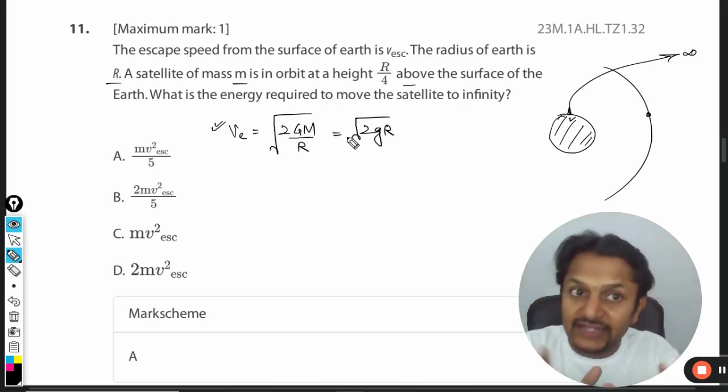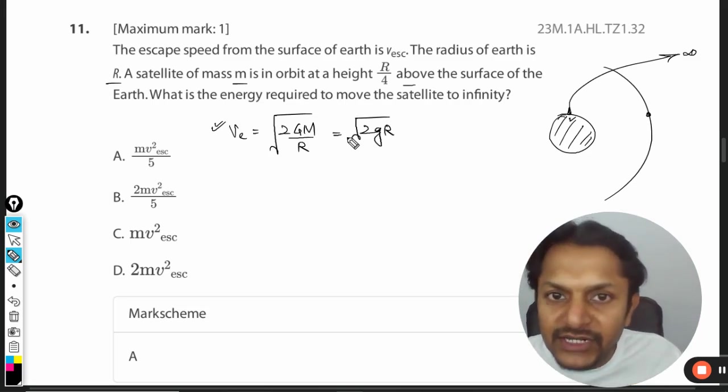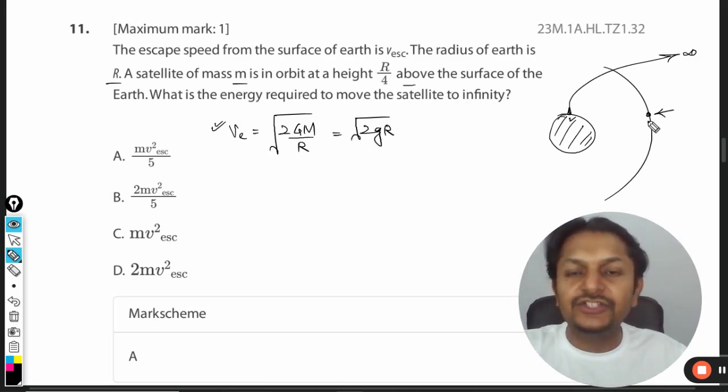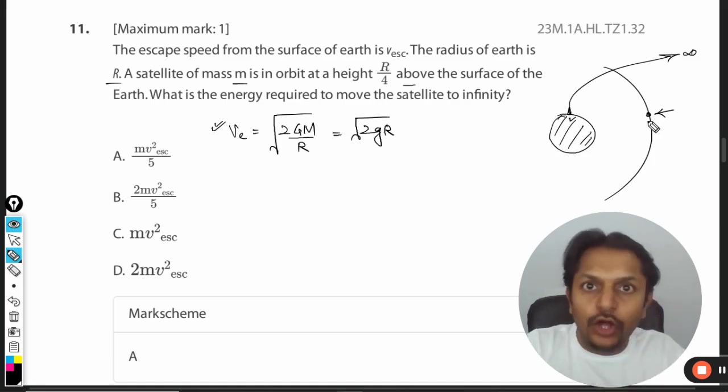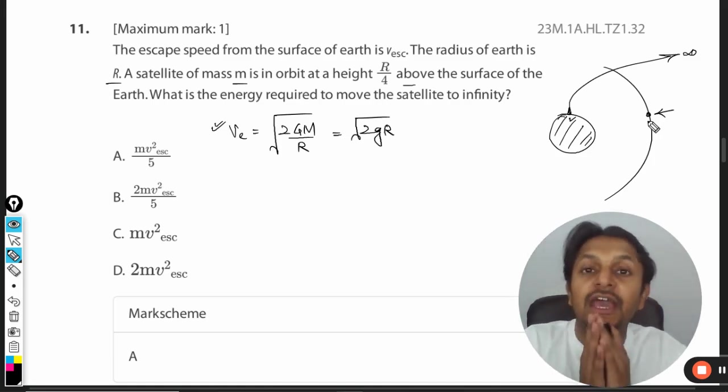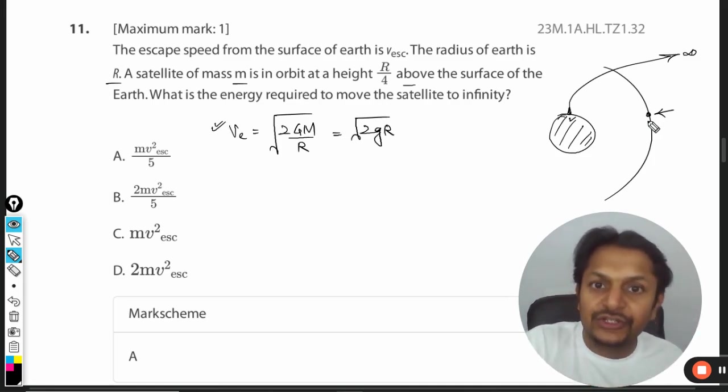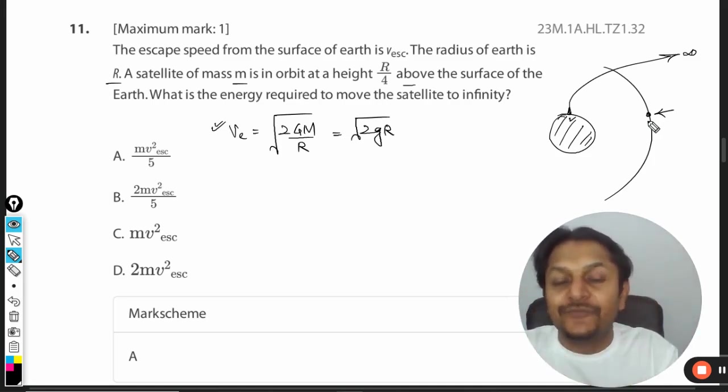Both are the same at Earth's surface, which is correct. But in this question, we're talking about a satellite already in orbit, not at Earth's surface. So this escape speed formula is not applicable in this situation. You cannot use these formulas.